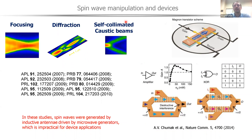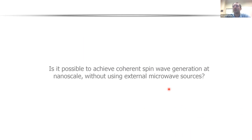Significant progress has been made recently. It has been demonstrated that spin waves can be efficiently focused, can undergo diffraction, and can form self-collimated caustic beams. Proof-of-principle devices have been demonstrated, including a magnon transistor, magnon amplifier, and magnon-based logic. However, in all these demonstrations, spin waves were generated by external microwave sources, which is not practical for real devices. The question is: can we achieve coherent spin wave generation at the nanoscale without external microwave sources?